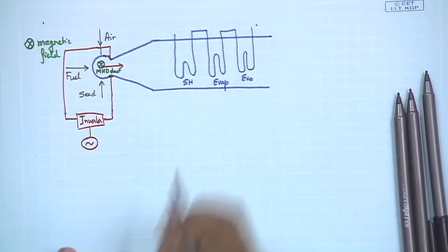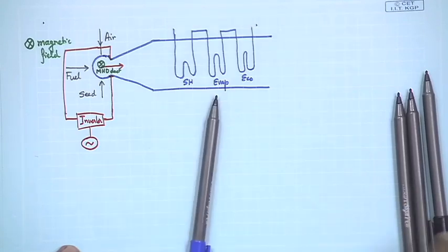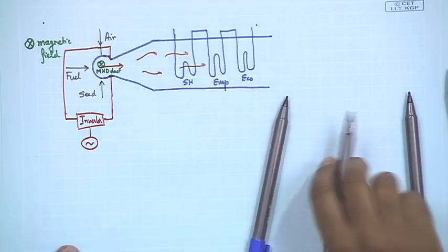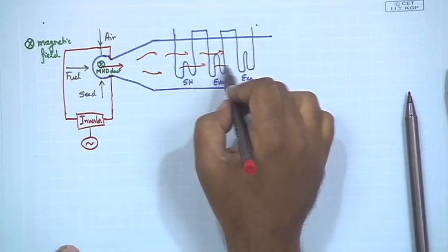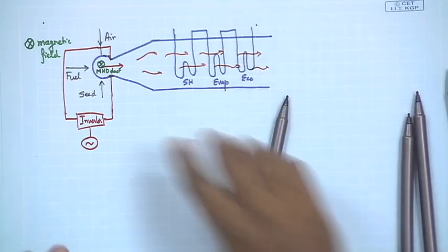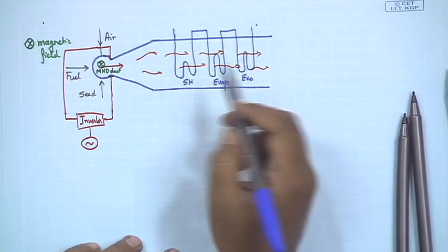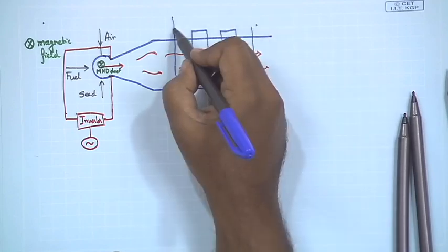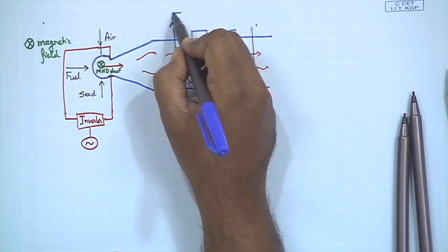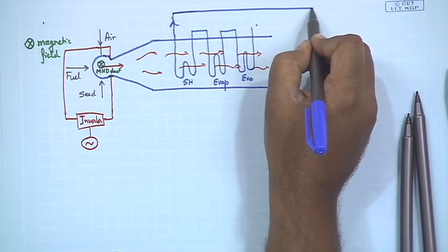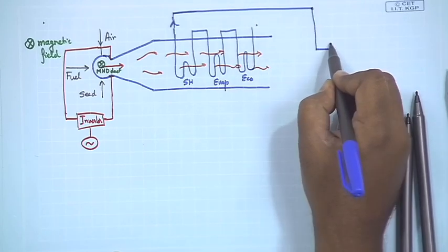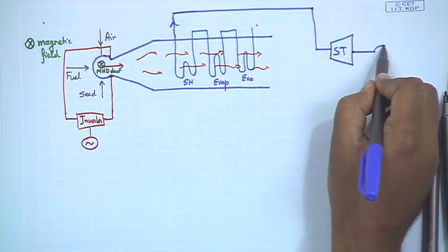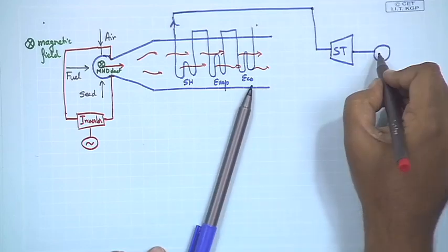The boiler sections are: economizer, then the evaporator, then the super heater. The gas flows through these sections, losing temperature progressively. When it is hottest it goes to the super heater first, then the evaporator, then the economizer. Finally we get steam that goes to the steam turbine to generate additional electricity.